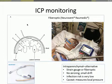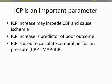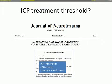There is also the fiber optic method — the Neurovent — which has essentially the same advantages and disadvantages as the other intra-parenchymal measurements. I think Giuseppe already convinced you that ICP is important.